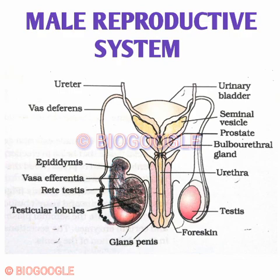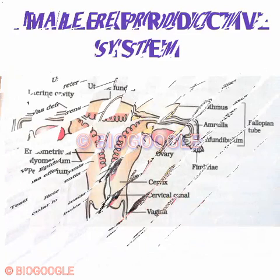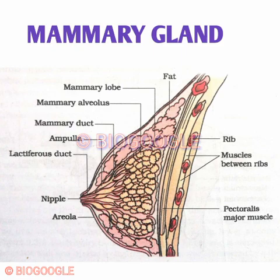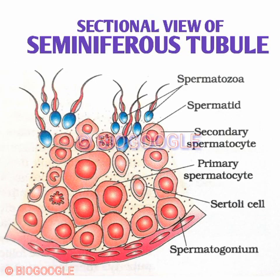Next is the male reproductive system from human reproduction — do not miss the important parts; it will be asked for five marks, so a minimum of ten labelings must be there. Next is the female reproductive system — show the ovary, fallopian tube, uterus, and all three layers of the uterus clearly. Next, the mammary gland will be asked for three marks, and the section of seminiferous tubules will also be asked for three marks — show all levels like primary and secondary spermatocytes.